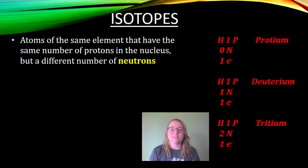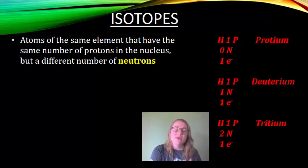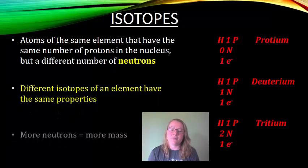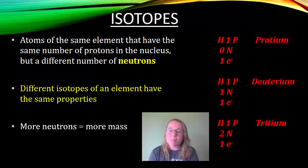When you have forms of an element with a different number of neutrons, we call those isotopes. Isotopes are atoms of the same element that have the same number of protons in the nucleus, but they have a different number of neutrons. Different isotopes have the same properties because the properties are associated with the number of protons, but when you have more neutrons, you have more mass. The only thing that changes with an isotope is the number of neutrons.